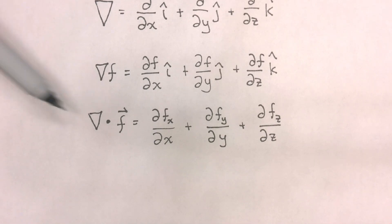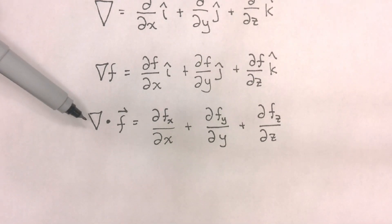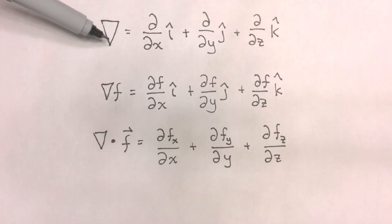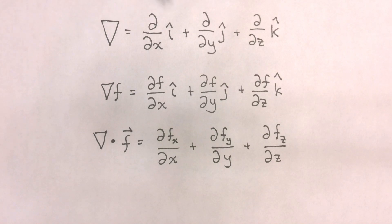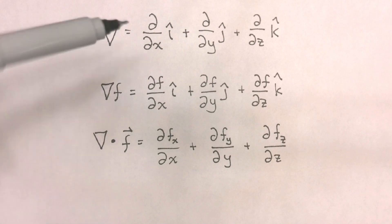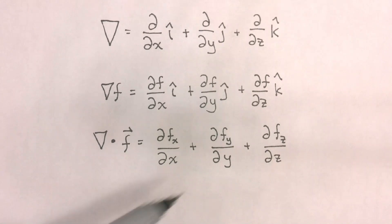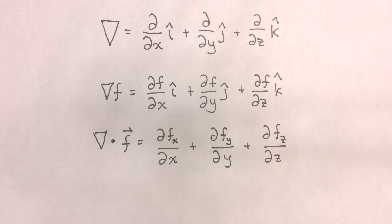This dot product formulation is actually a little misleading because the gradient operator is not a vector itself — it's actually an operator. However, if we follow the definition of the gradient operator and apply the dot product, imagining nabla and f as vectors, we get this scalar. So these are two ways we can apply the gradient operator: to scalars and to vectors respectively.